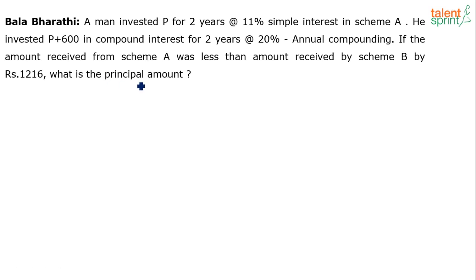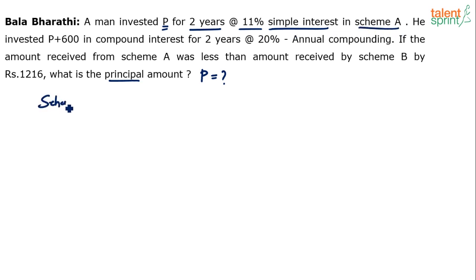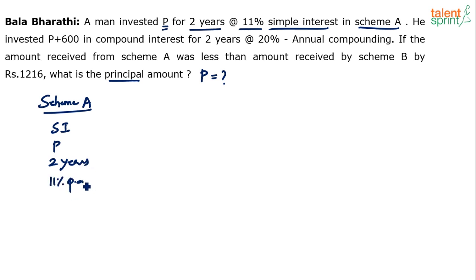We have to find out the principal amount P. A man invested P, the principal amount, for 2 years at 11% per annum simple interest in Scheme A.